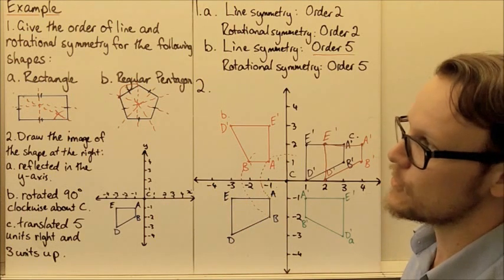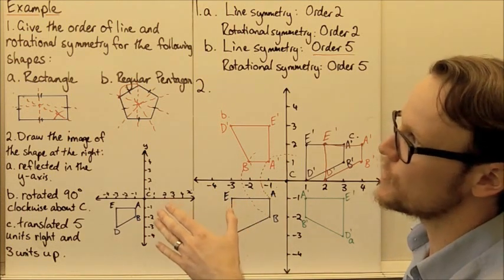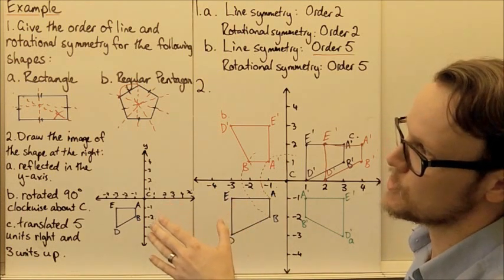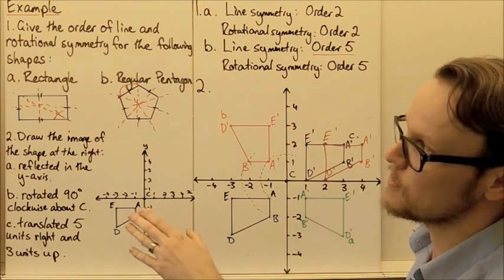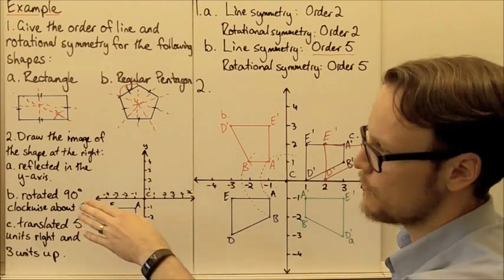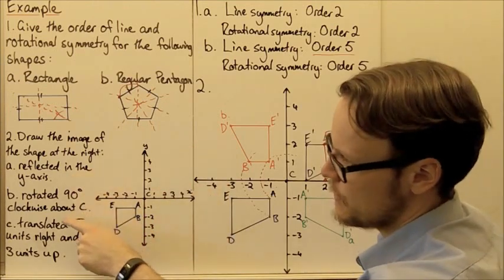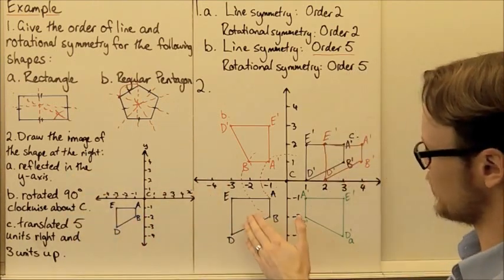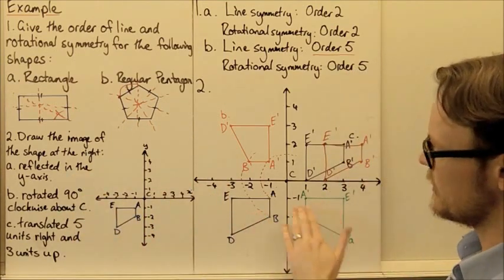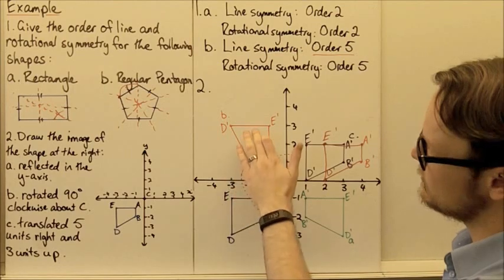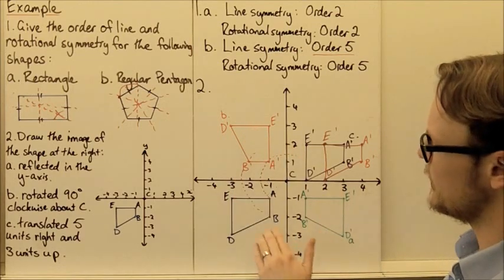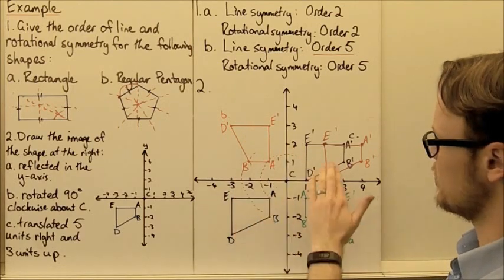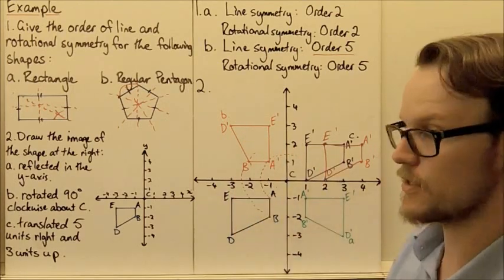Each of these covers all of the different isometric transformations we're going to be looking at — reflection, rotation, and translation.